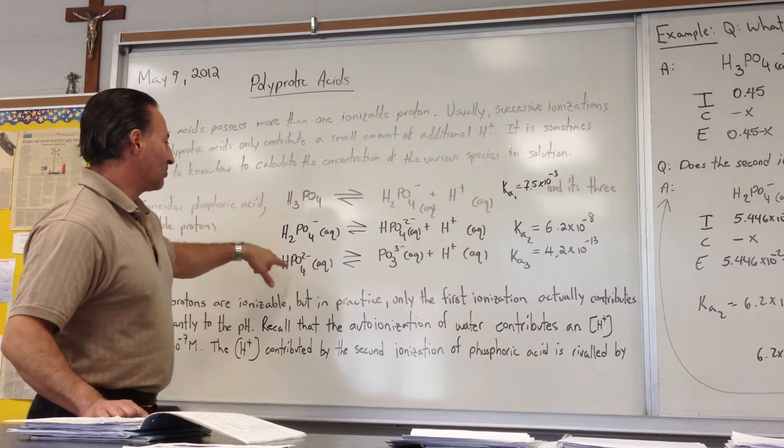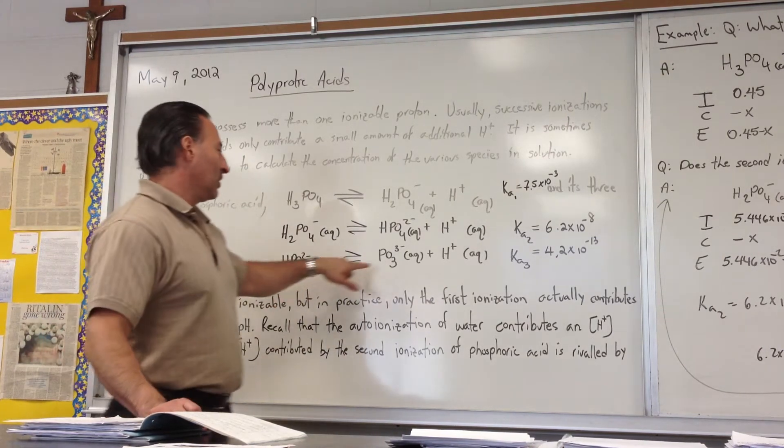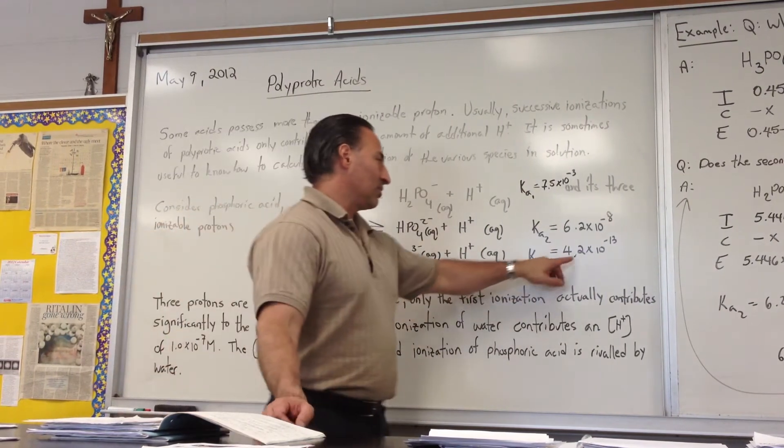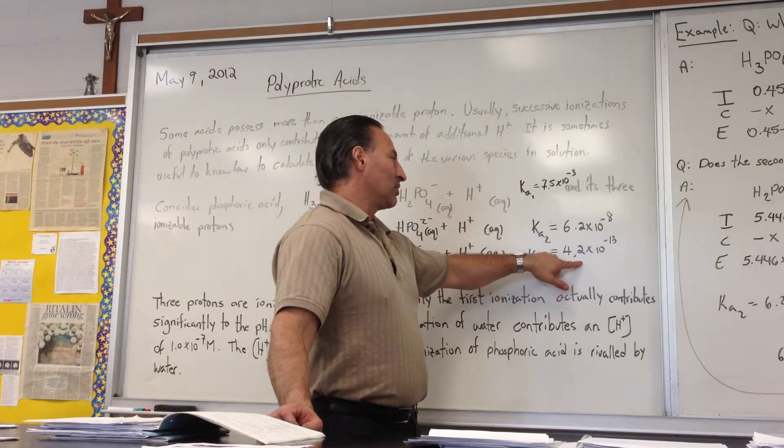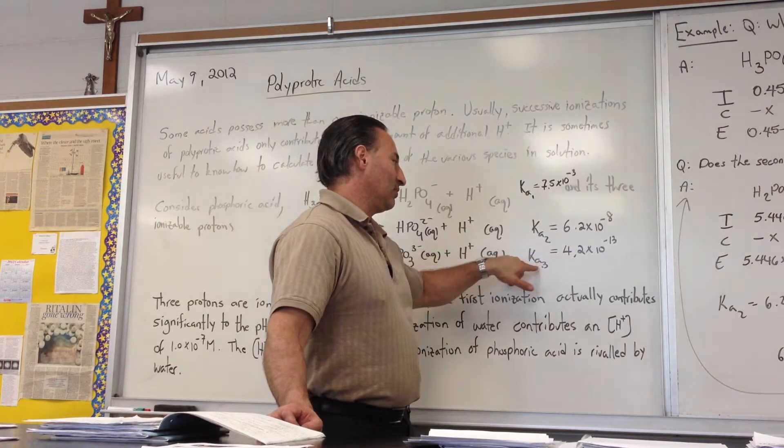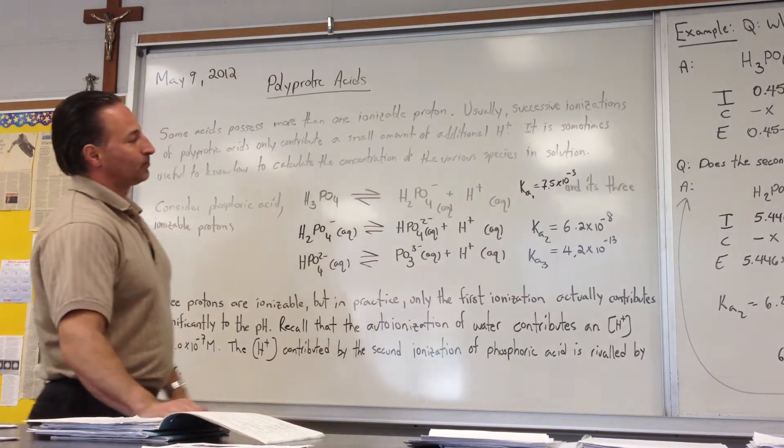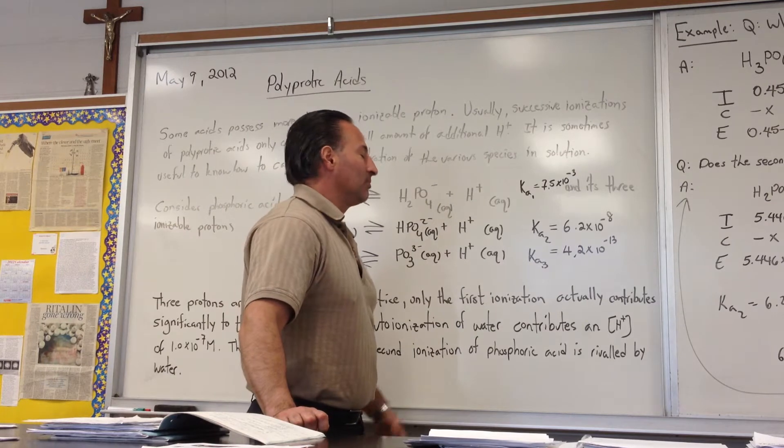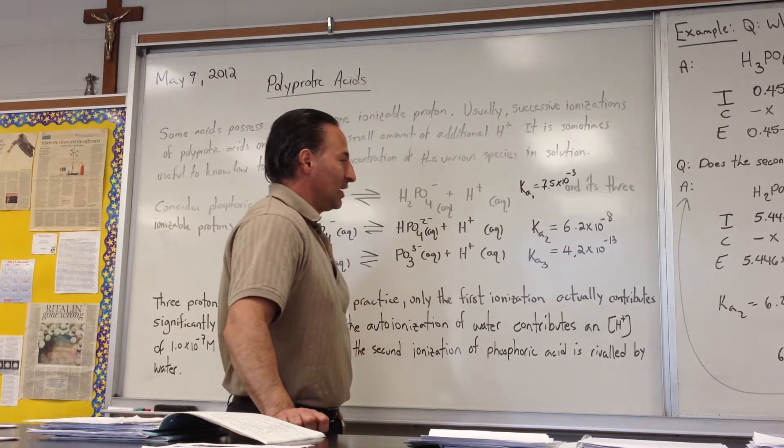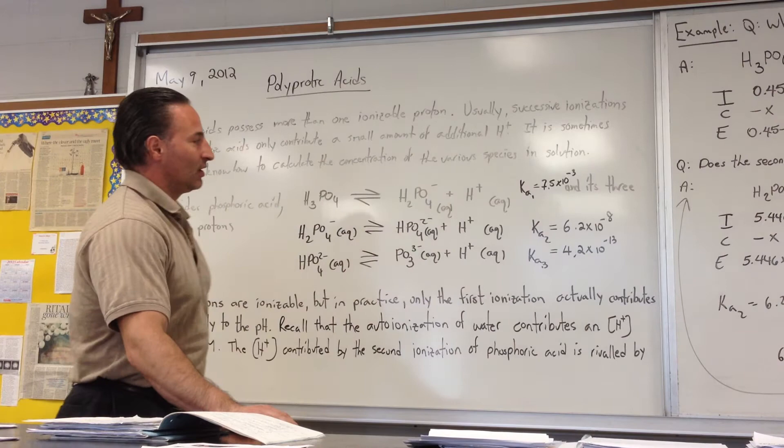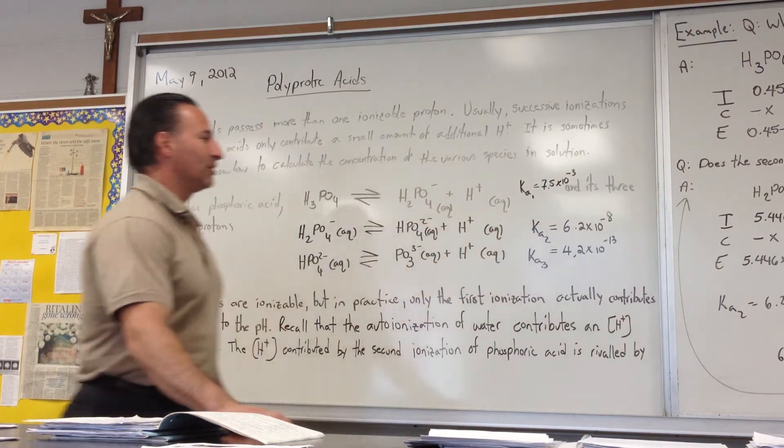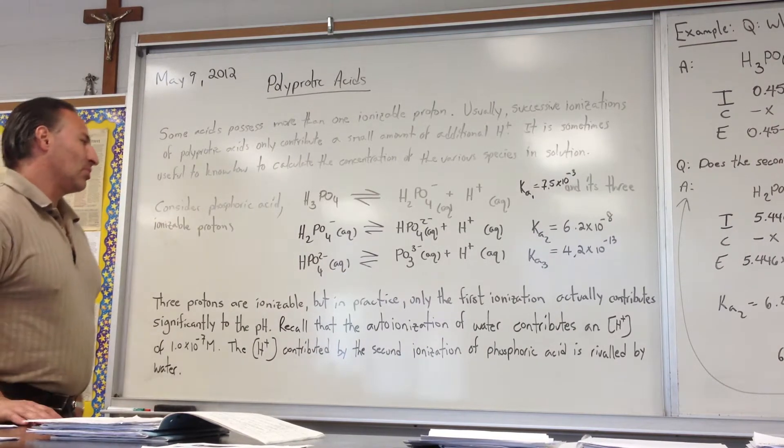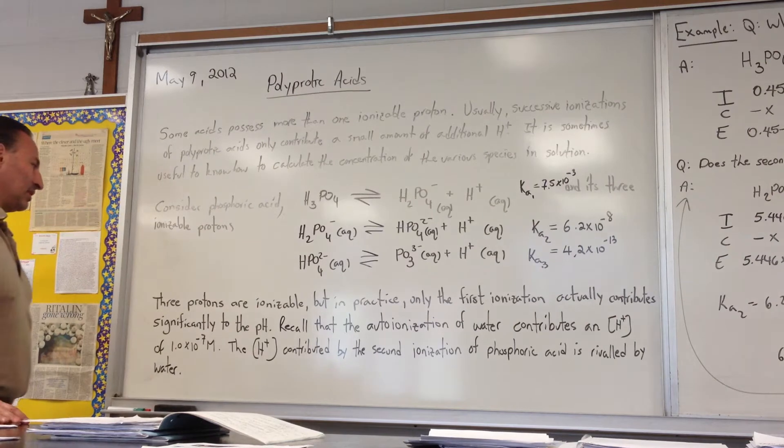And finally the third ionization, where hydrogen phosphate ionizes to form phosphate and yet another hydrogen ion, has another hundred thousand fold smaller value. So the value for the third ionization is 1.0 times 10 to the positive 10 times smaller than the value of Ka1. So both of these values are going to have a very small impact on the actual pH of the solution. Three protons are ionizable, but in practice only the first ionization actually contributes significantly to the pH.